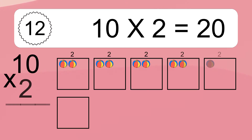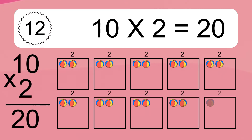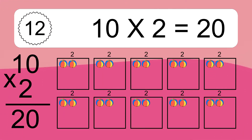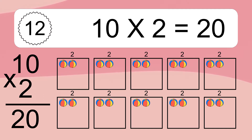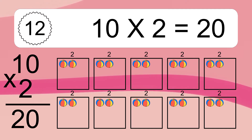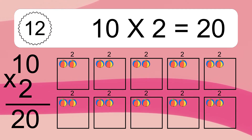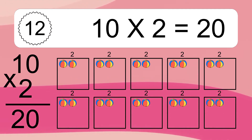10 times 2 equals 20. We have 10 boxes, and each box has 2 colorful balls inside. If you count all the balls in all the boxes together, you will have 10 times 2 balls. This equals 20 balls.